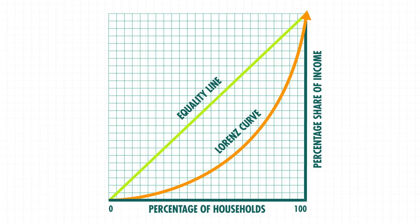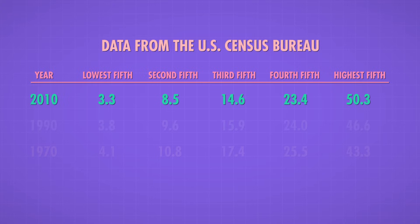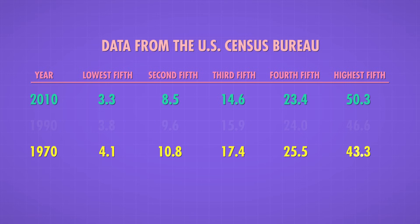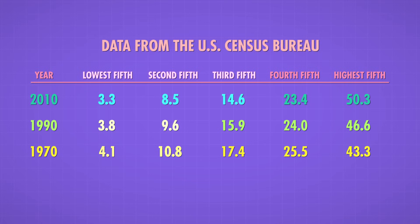This graph, called the Lorenz curve, helps visualize the depth of inequality. For 2010, the U.S. Census Bureau found that the poorest 20% of Americans made 3.3% of the income, and the richest 20% made over 50% of the income. That's pretty unequal — but has it always been like this? In 1970, the bottom group earned 4.1% of income and the top earned 43.3%. By 1990, things were even less equal, and the 2010 numbers are just a continuation of that trend. Over those 40 years, each of the bottom 80% of households earned smaller and smaller shares of total income.